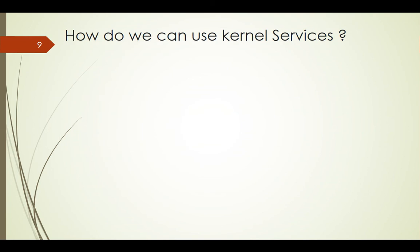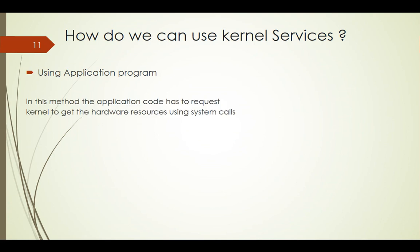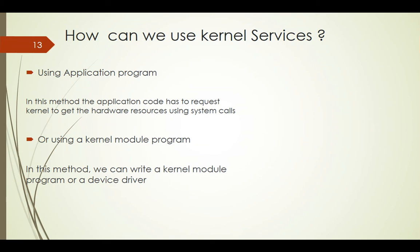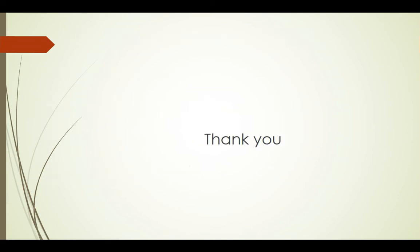How can we use kernel services from an application program? As discussed, by using system calls — the application code requests the kernel to get hardware resources using system calls. Another method is to write a kernel module program, meaning we can directly write a device driver or a customized device driver. But the typical technique is better — go for the application program.